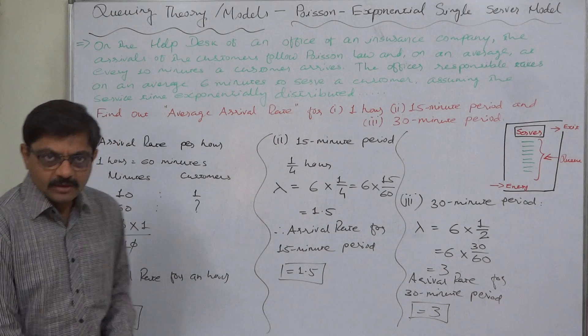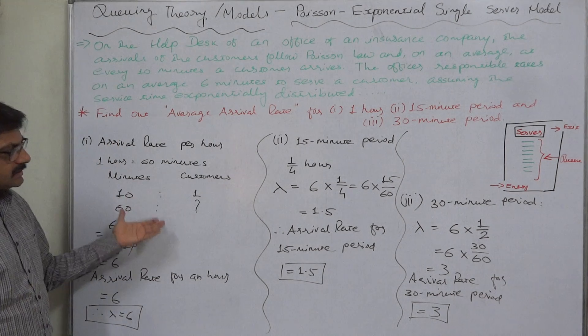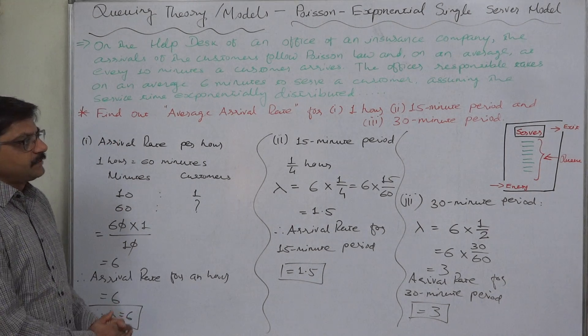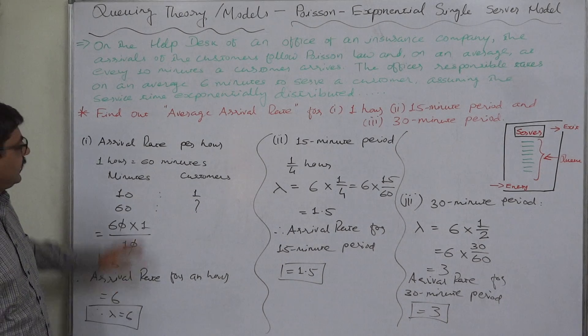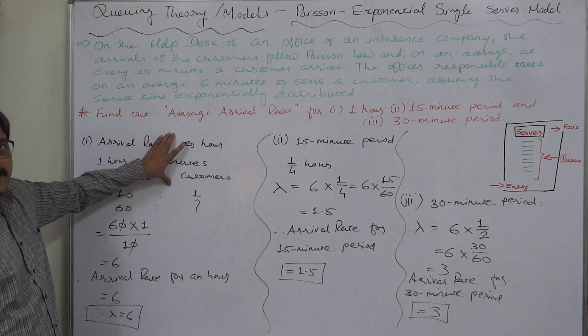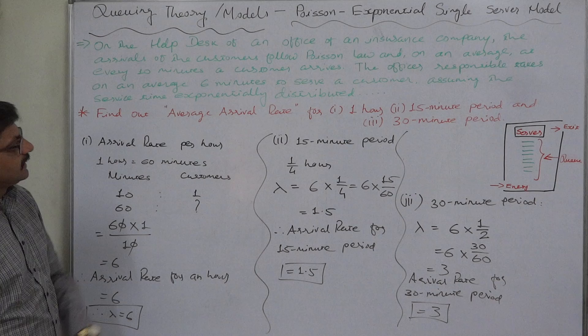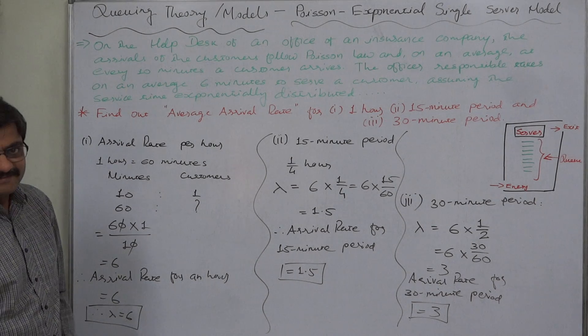So this was a very simple explanation of finding the average arrival rate or simply arrival rate in case of single server model. That's it, thank you.